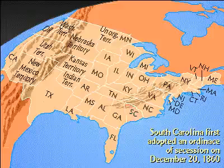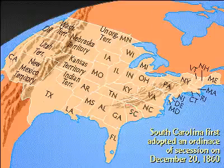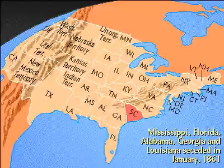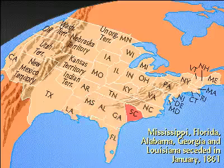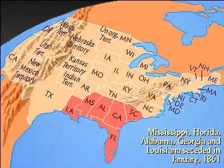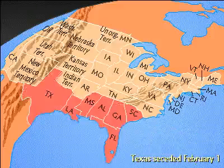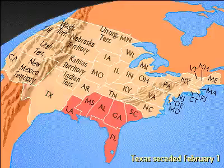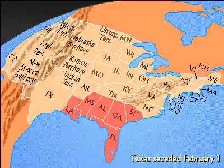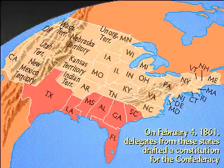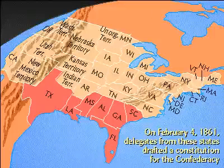South Carolina was the first to secede on December 20th, 1860. Mississippi, Florida, Alabama, Georgia, and Louisiana soon followed in January 1861, with Texas seceding on February 1st. Three days later, delegates from these states drafted the Constitution of the Confederacy.